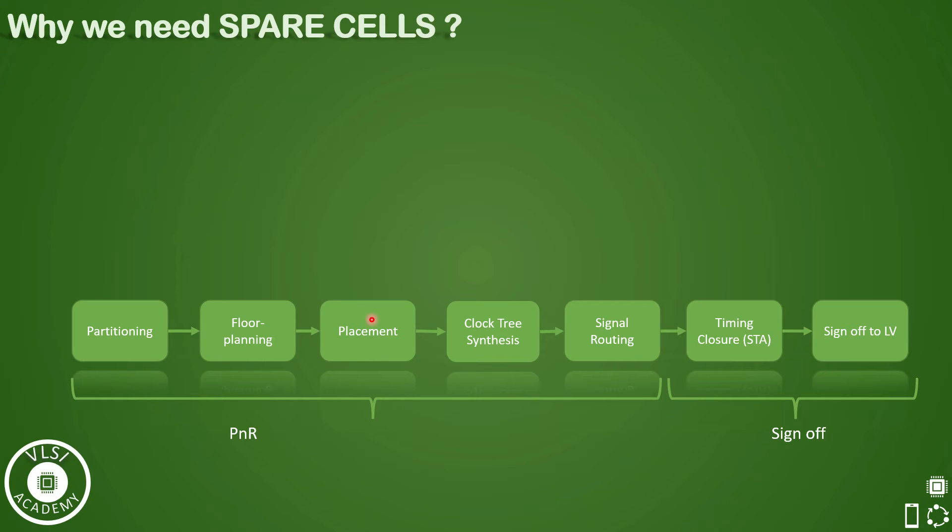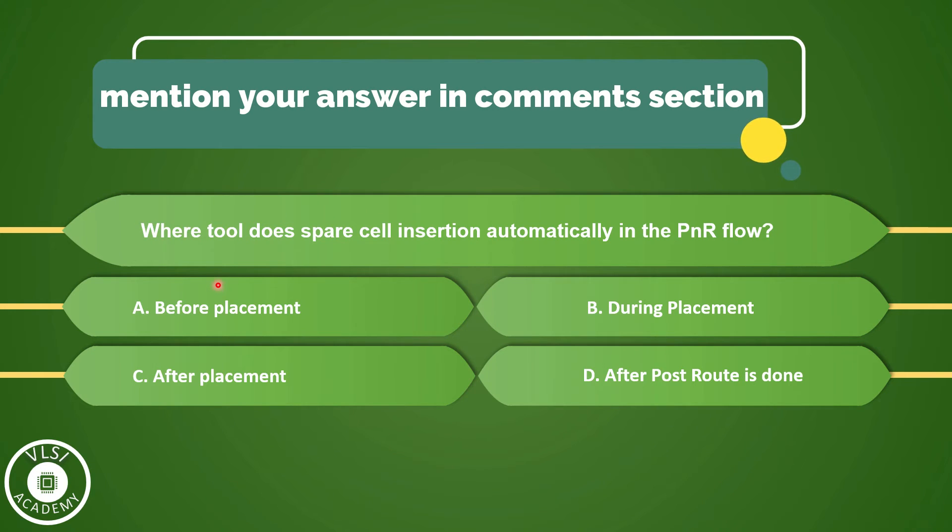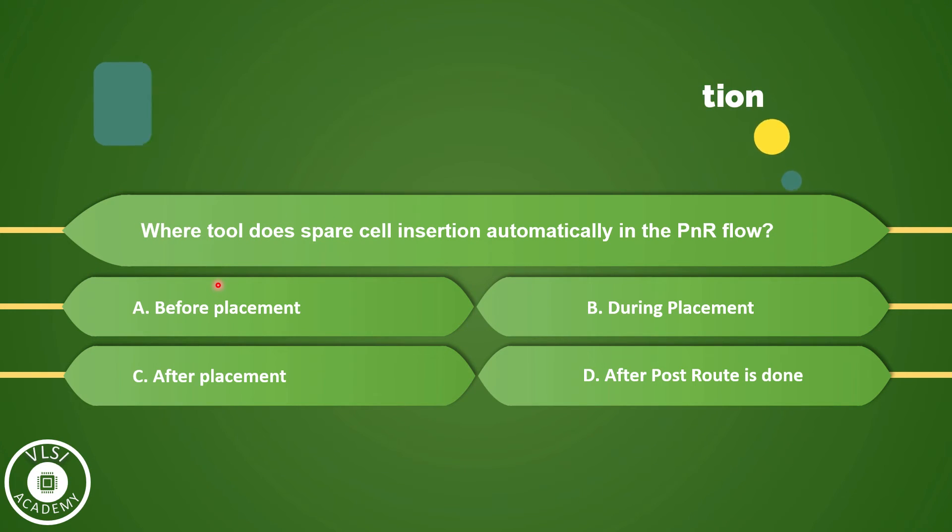So the first question that should come to mind is: where does the spare cell insertion happen automatically in the PNR flow? So the options for you are: before placement, during placement, after placement, or after the post route is done. At which stage does the tool do the spare cell insertion automatically in the PNR flow? If you know the answer, please do mention your answer in the comment section before going further. You can still guess if you don't know the answer; we would like to hear from you.